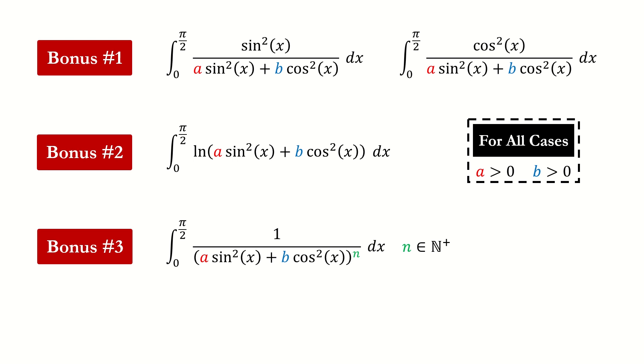Finally, for bonus number 3, how to solve this general case for any positive integer n as a power index? Especially, Wolfram Alpha fails when the power index is greater than or equal to 2.